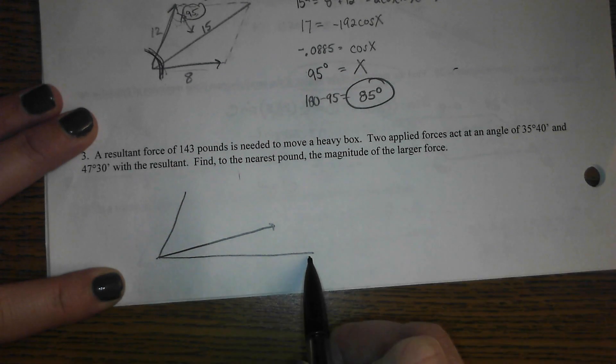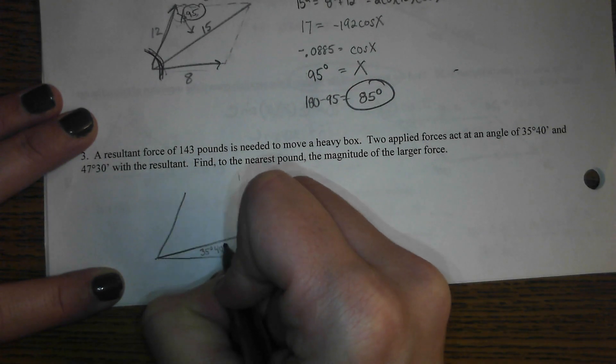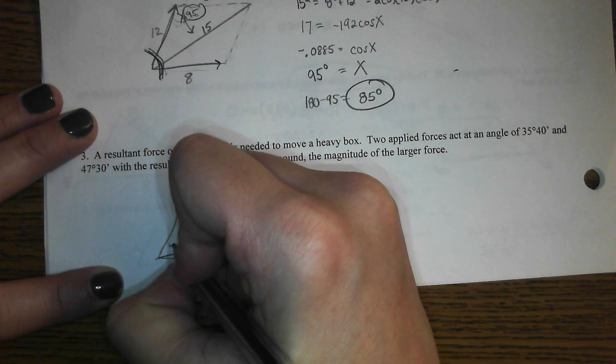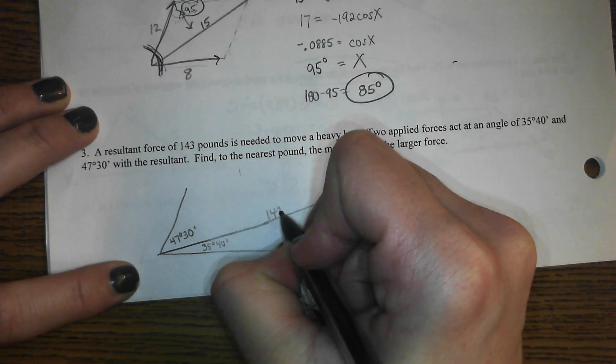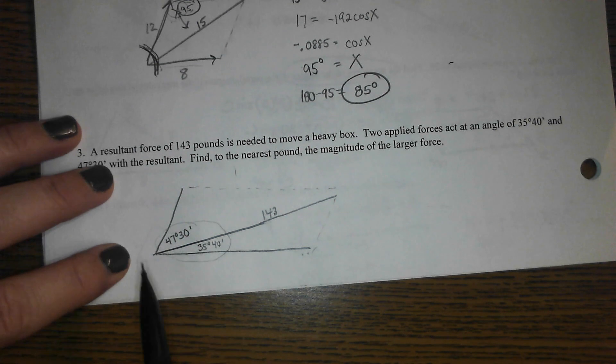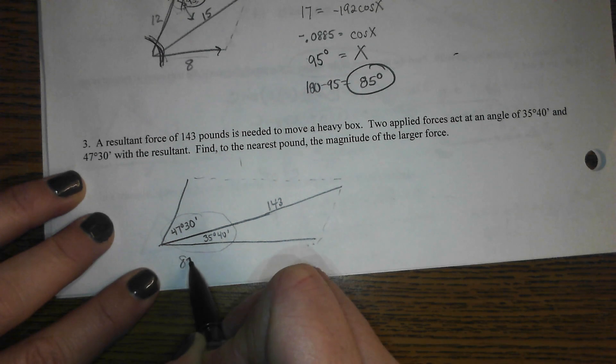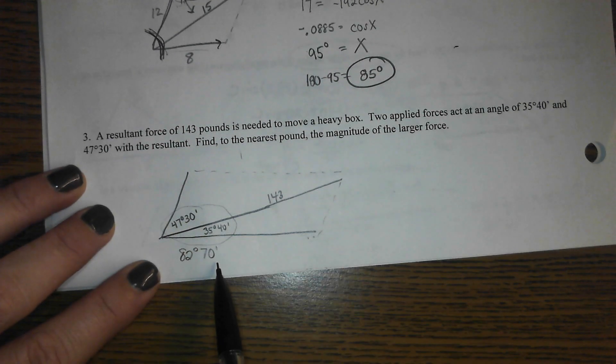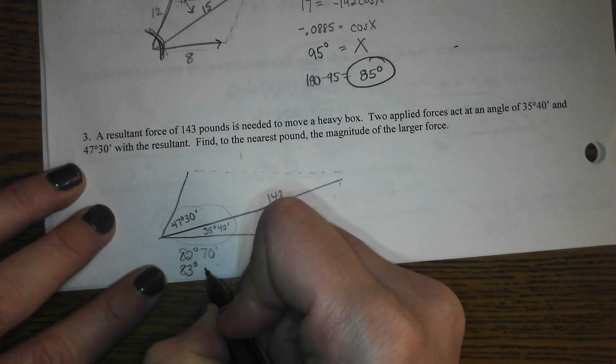Okay, so here's what she just gave us. She gave us that the two applied forces, this bottom one will be force one and the top one will be force two. She gave us that one of those angles is a 35 degree 40 minute, and the other angle with the resultant is the 47 degree 30 minute, and the length of the resultant, thank you, is 143. So if you were to use a dotted line to complete out your parallelogram, what is this total angle? So 47, this is important, 47 plus 35 is 82 degrees with 70 minutes, but every 60 minutes is an additional degree. Do we make sense of that?